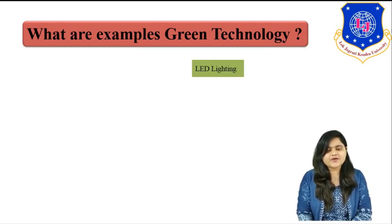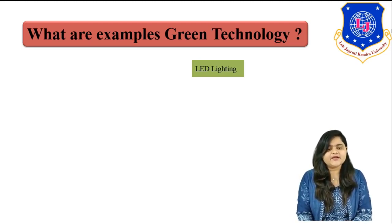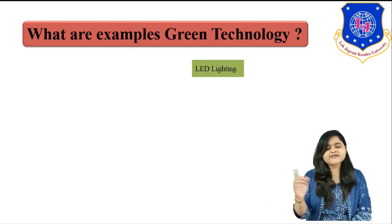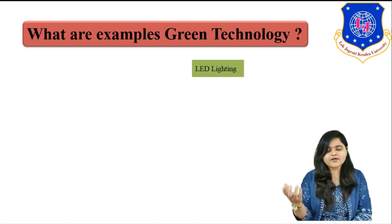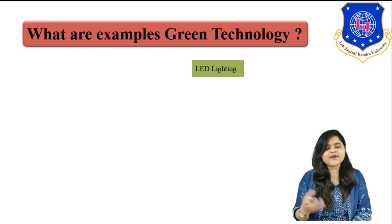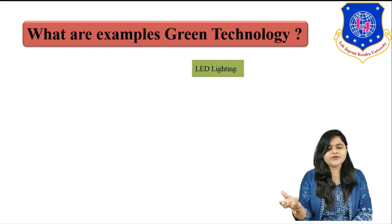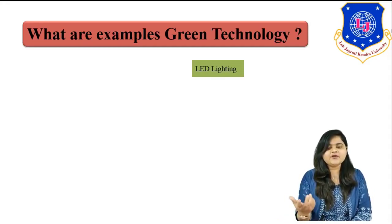One very good example of green technology is LED lighting. The advantages of LED lighting compared to conventional bulbs: one, it increases efficiency, meaning lower energy requirement and lower electric consumption. Second, it is brighter. Third, conventional lighting uses mercury, which is very hazardous to human health and the environment. So LED lighting is a beautiful example of green technology.